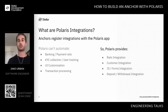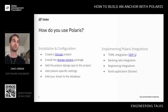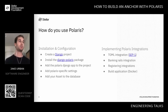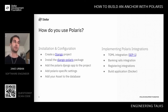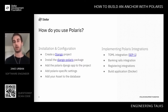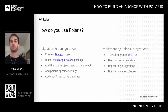So Polaris provides rails integration classes. In your code, you would write within the rails integration class a function that connects to your bank and actually makes payments to users, and you register that integration with Polaris. To use Polaris, we're going to do two things in this talk: install and configure Polaris, and implement enough integration points to get the anchor server up and running.